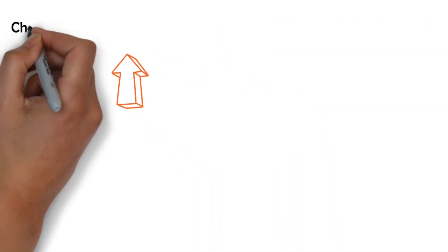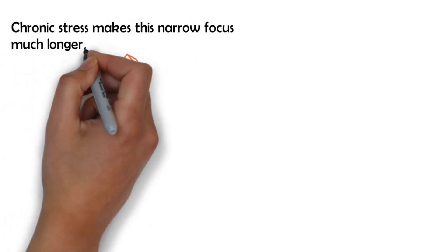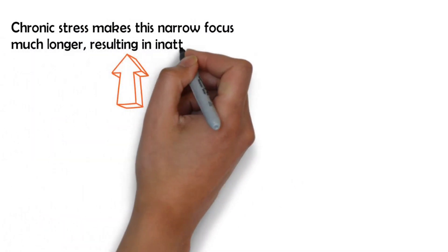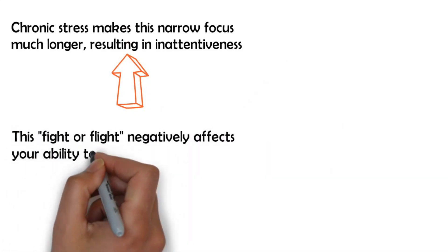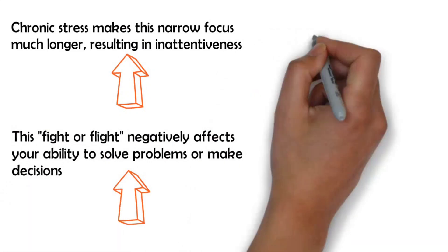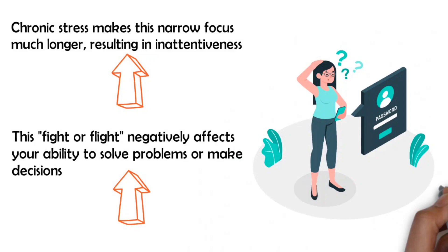When stress becomes chronic, this narrow focus continues for a long time and we have difficulty paying attention to other things. This fight or flight tunnel vision can negatively affect your ability to solve problems or make decisions. You might find that you are more forgetful and have a harder time remembering things.